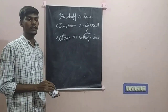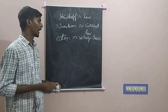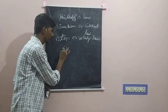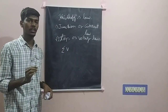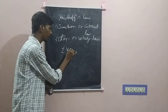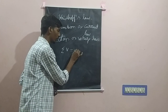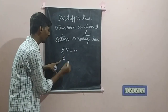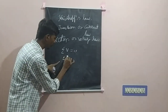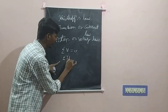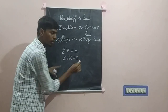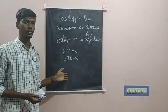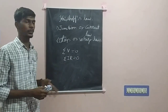The voltage law states that the algebraic sum of potential difference in an enclosed circuit will be equal to 0. In other words, the algebraic sum of the product of current and resistance will be equal to 0. This can be proved using Ohm's law.